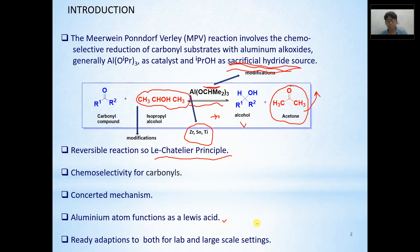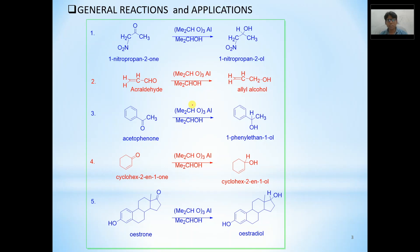Now, let's be acquainted with the general reactions and the applications. For example, even if there are reducible groups like nitro group, there is no impact on nitro group. Rather, this carbonyl group gets reduced to alcoholic group. Likewise, there is no impact on this double bond. It is intact, but this aldehyde group gets reduced. There is no impact on the aromatic system. It is intact, but the carbonyl group gets reduced. Likewise, the double bond of alpha-beta unsaturated centers remains intact and carbonyl gets reduced. And very important application is that estrone gets converted into estradiol. Simply this C double bond O gets reduced to OH.